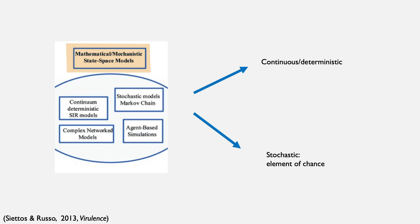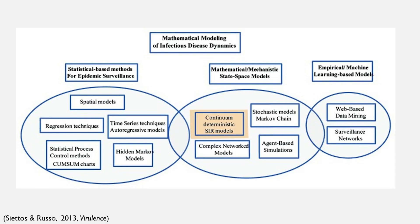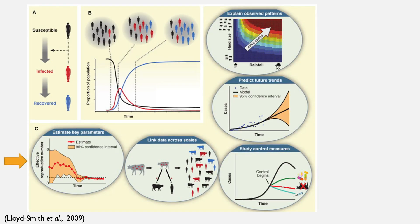My work often uses compartmental models, which are a type of mechanistic model. You may have now heard of SIR models, or susceptible-infected-recovered models, in the context of COVID-19. These can estimate key parameters or variables used in mathematical equations needed to understand disease dynamics, including things like incubation period or duration of infection. These models can also help us link data across scales, going from knowing something about an individual to scaling up to an entire population.